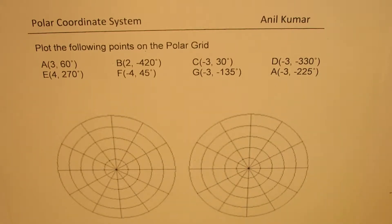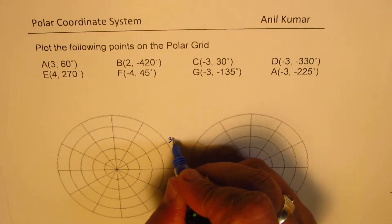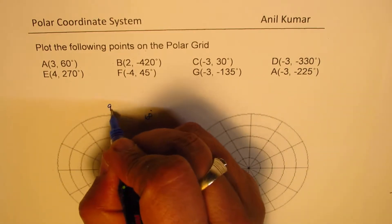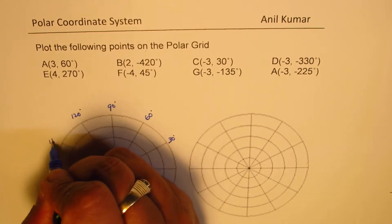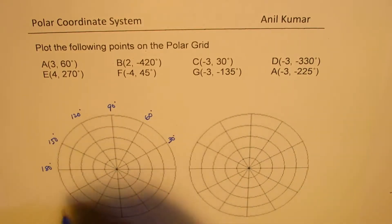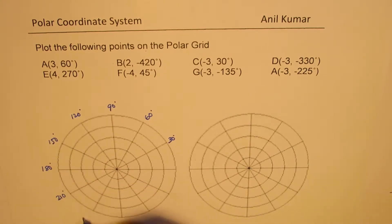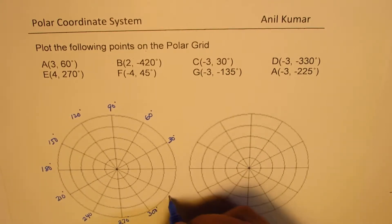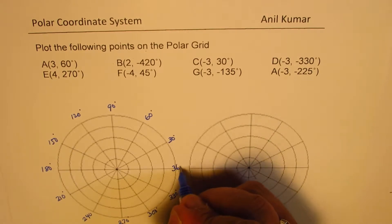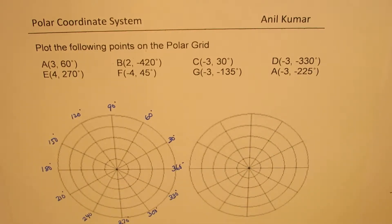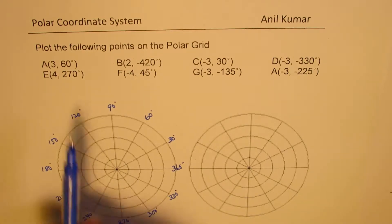I'm Anil Kumar, welcome to my series on polar coordinate system. Here we will see how to plot polar coordinates on a polar grid when the angles are given in degrees. We have divided this into degrees by 30s, so this is 30 degrees, 60 degrees, 90 degrees, 120 degrees, 150 degrees, 180 degrees, and so on — keep adding 30 degrees to get your angles. So 300 degrees, 330 degrees, and 360 degrees — that is how we have shown our polar grid. Now we'll plot these points one by one.